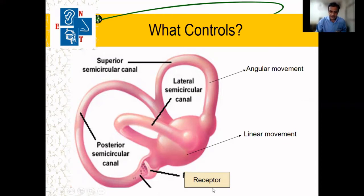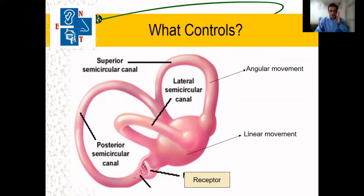Similarly, the vestibule area — which consists mainly of the utricle and the saccule — is mainly important to manage linear movement.